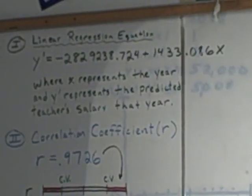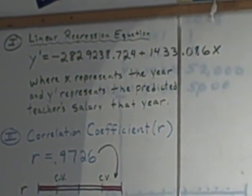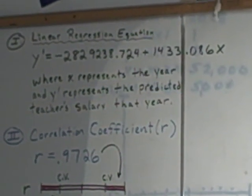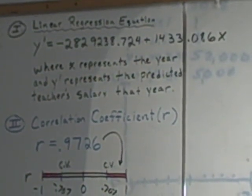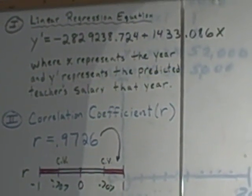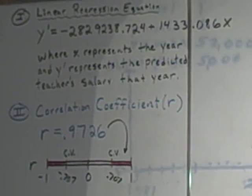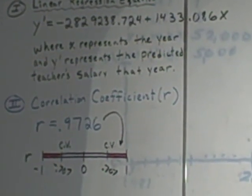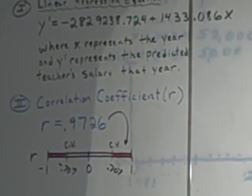I used the regression analysis on the calculator to come up with this equation, which you see at the top of the board, and I also found a correlation coefficient of 0.9726, determined that that was a statistically significant correlation coefficient.